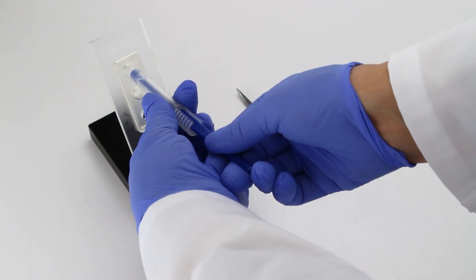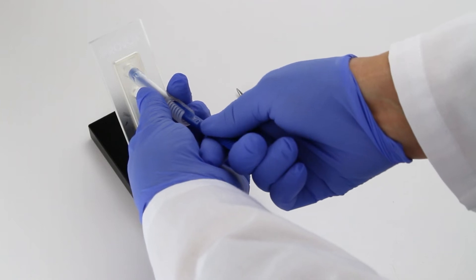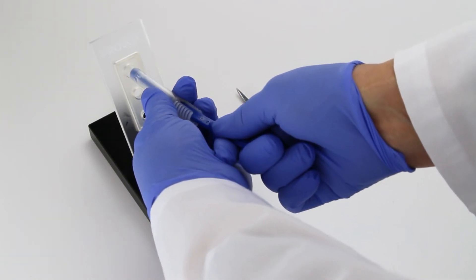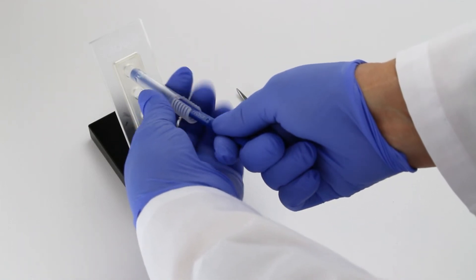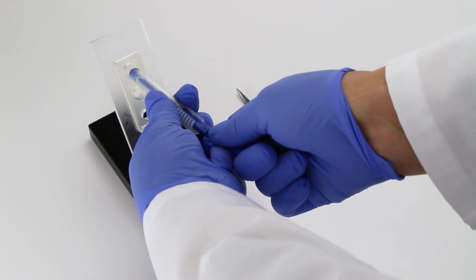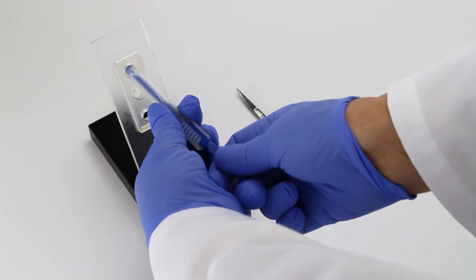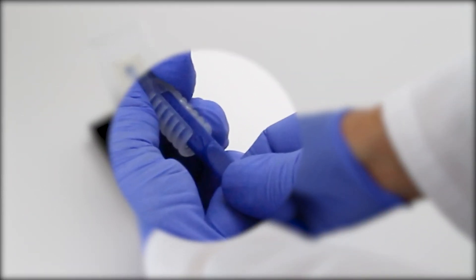Gently insert the loading tube into the TE puncture until the tip of the tube is completely inside of the puncture. Insert the prosthesis by holding the loading tube stable with one hand and pushing the inserter pin forward with your other hand until the line marked 2 advances to the edge of the loading tube.